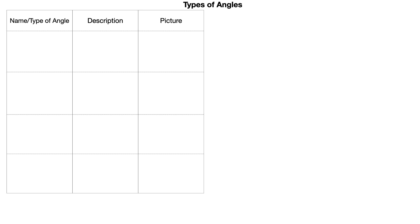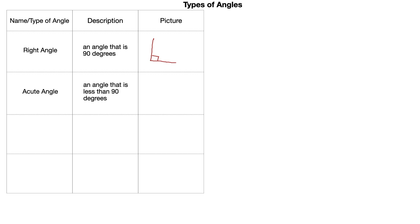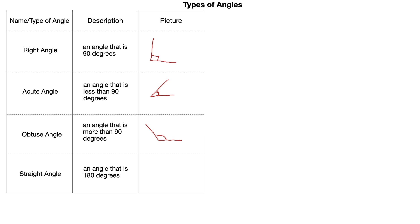Now let's look at different types of angles. A right angle is exactly 90 degrees — usually indicated by a small box. An acute angle is less than 90 degrees. An obtuse angle is more than 90 degrees — like taking that L-shape and making it wider. And a straight angle is 180 degrees — it's a straight line, like half a circle.